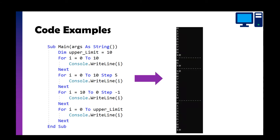Here are some examples with typical outputs. For 'i = 0 to 10' printing i, it outputs zero, one, two, three, four all the way up to ten. Stepping by five gives zero, five, ten. Counting down from ten to zero is the reverse. And using a variable set to ten by the user loops that many times. This is how we write the code in Visual Basic and what the output looks like.